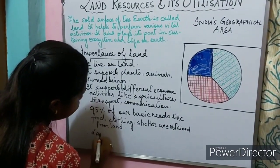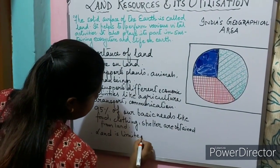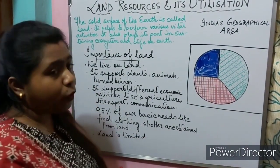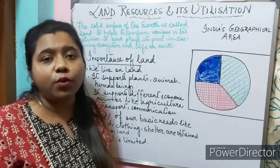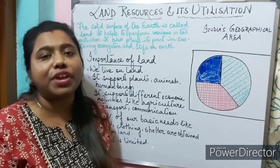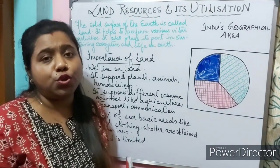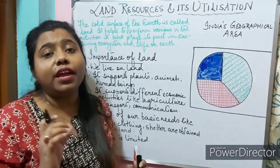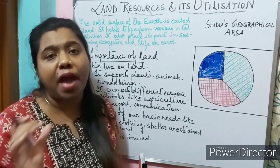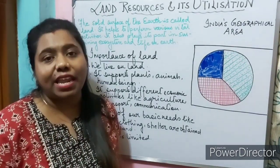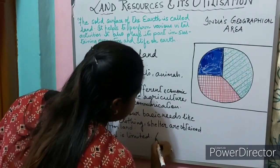Land is limited. As our population is increasing day by day, our land will not increase because our land is fixed. So we need to utilize the land in a proper, judicious manner, in a careful manner, with proper planning, because land is of finite magnitude.